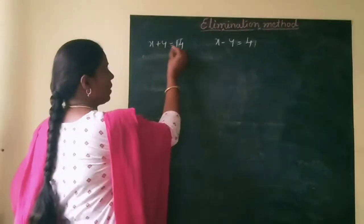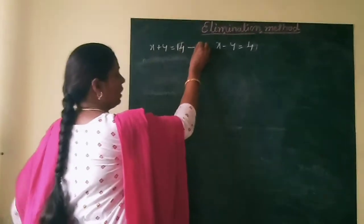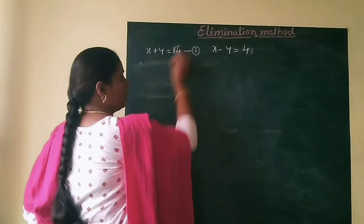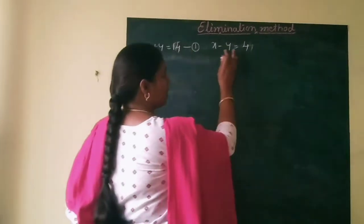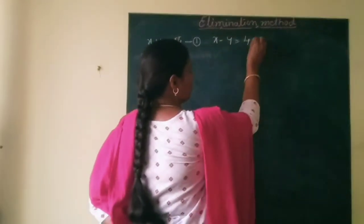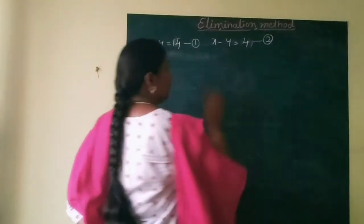The first equation is x plus y is equal to 14, this is equation 1. The second equation is x minus y is equal to 4, this is equation 2.